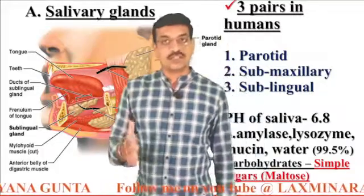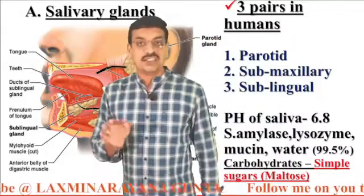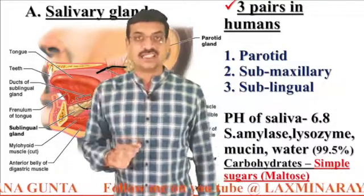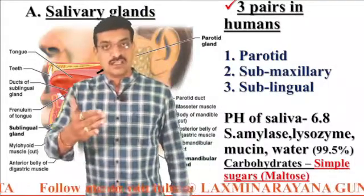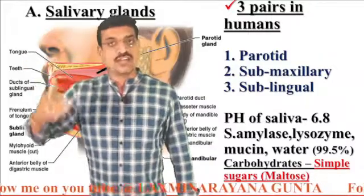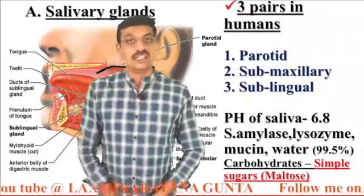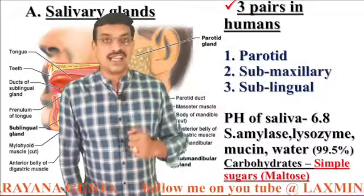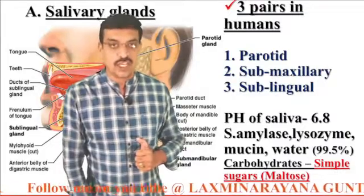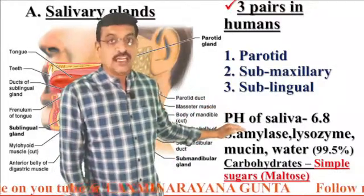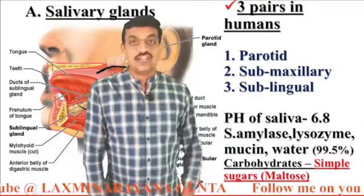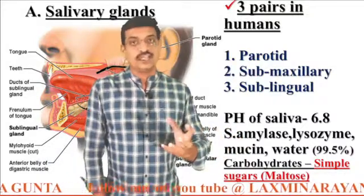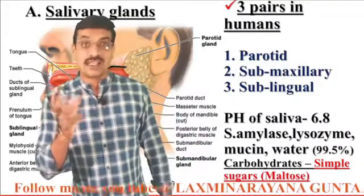These are the three pairs of salivary glands present in humans and their combined secretion is called saliva. The pH of saliva is 6.8, meaning it is slightly acidic. Saliva consists of an enzyme called salivary amylase (or ptyalin), responsible for the digestion of carbohydrates, and another enzyme called lysozyme, which kills microorganisms that try to enter the alimentary canal. It also consists of mucin, which makes the food into a slurry mass.